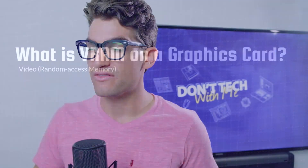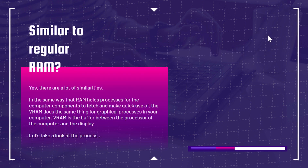Let's dive into the reason you're here — talking about VRAM, Video Random Access Memory, or Video Memory for short. Is this similar to regular RAM? Yes, there are a lot of similarities. In the same way that RAM holds processes for computer components to fetch and make quick use of, VRAM does the same thing for graphical processes in your computer.